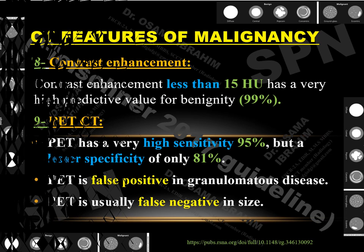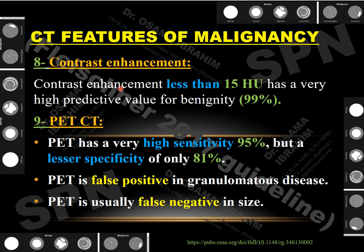The eighth CT feature is contrast enhancement. If contrast enhancement is less than 15 Hounsfield units, it raises the possibility of benignity. PET-CT is also a very useful tool for diagnosing malignancy, with high sensitivity reaching 95%, but specificity of only 81%. PET has false positives with granulomas and false negatives for small nodules less than 1 cm, so these limitations must be considered.